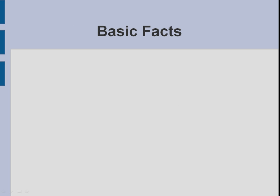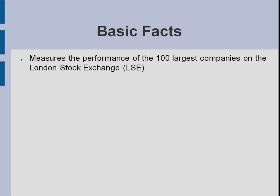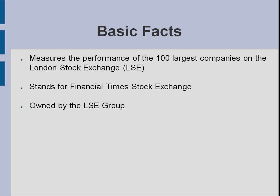It measures the performance of the 100 largest companies on the London Stock Exchange. So if the FTSE 100 is going up, that suggests that the general direction of the market is upwards, and you can compare it at various times in the year and see what's going on in the markets. It stands for the Financial Times Stock Exchange, although now the Financial Times doesn't have an interest in the company. The Financial Times Stock Exchange Group is owned by the London Stock Exchange itself, which is actually in the FTSE 100.